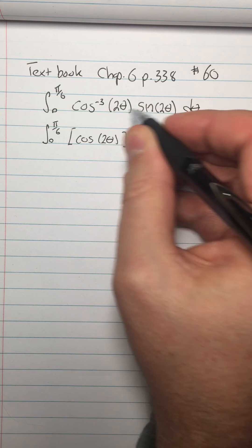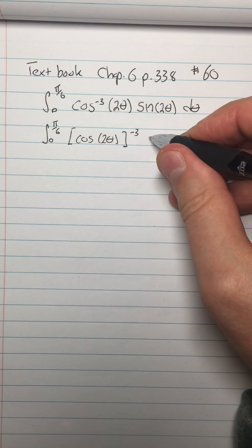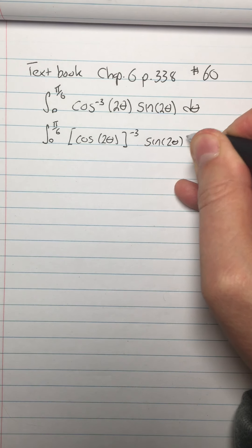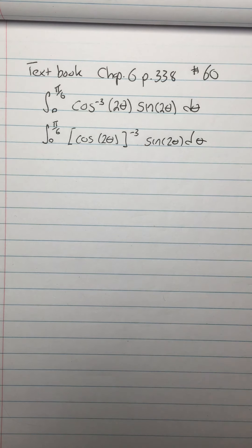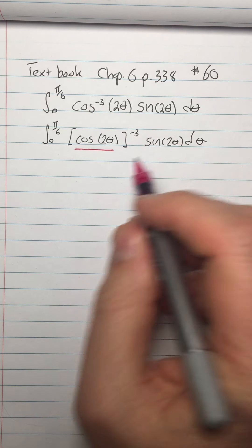I've added these parentheses in here as they really should be for clarification. They're not in the original problem in the book. Okay, and now what do you think the inside function is? That's right, the inside function is cosine of 2 theta.